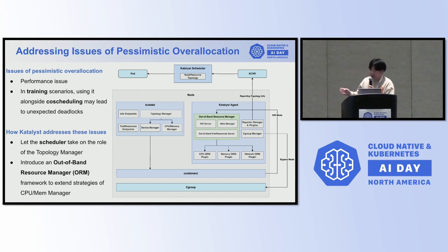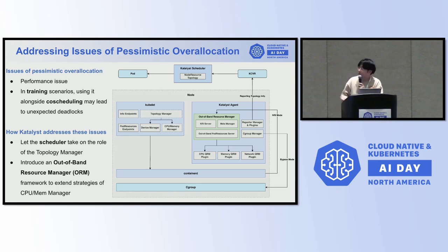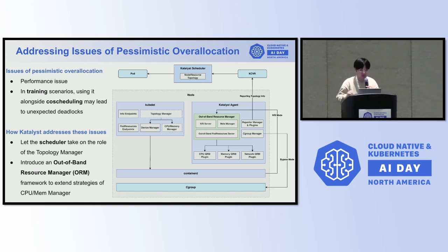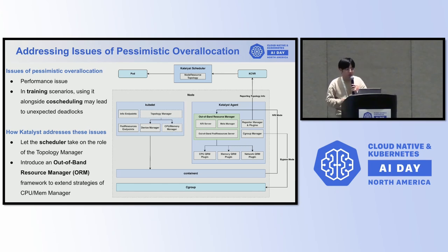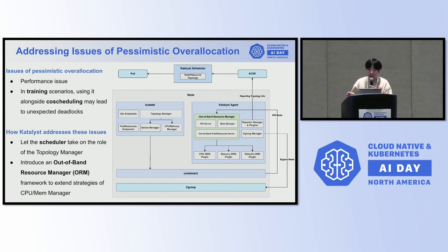ORM supports two modes for injecting resource allocation policies: the NRI mode and the bypass mode. We have implemented an NRI server within ORM, which is synchronously invoked by containerd when certain container lifecycle events happen, such as run pod sandbox, create container, remove pod sandbox, etc. This allows the injection of customized resource management policies. Additionally, for users with older versions of containerd, ORM also offers a bypass mode that can periodically update the container cgroup configurations.